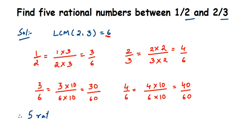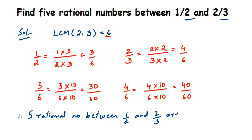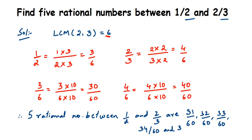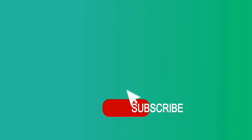Therefore, the 5 rational numbers between 1/2 and 2/3 are: 31/60, 32/60, 33/60, 34/60, and 35/60. Do not include 1/2 or 2/3 themselves. You can pick any 5 numbers from 31/60 to 39/60. I hope this is clear — if you have further questions or doubts, you can drop a comment below. Thank you for watching!